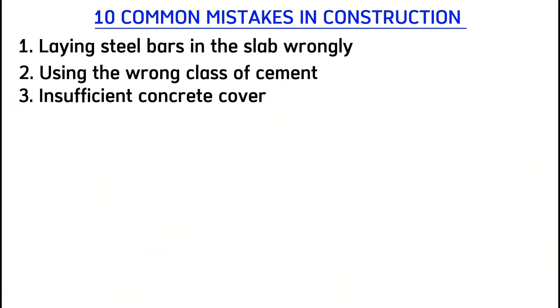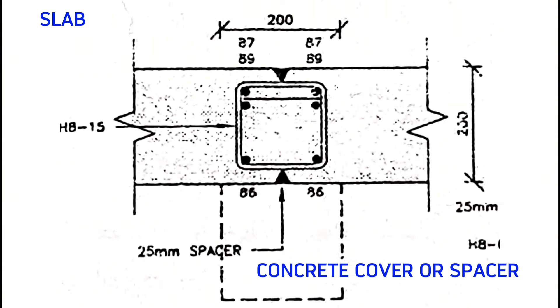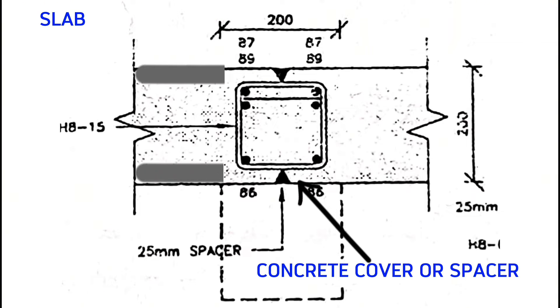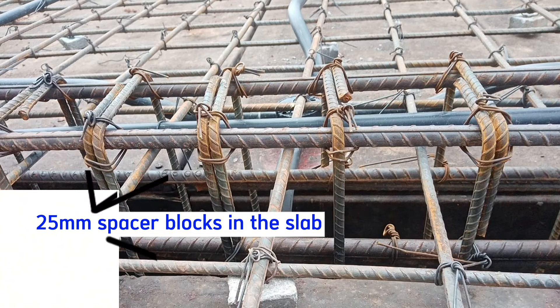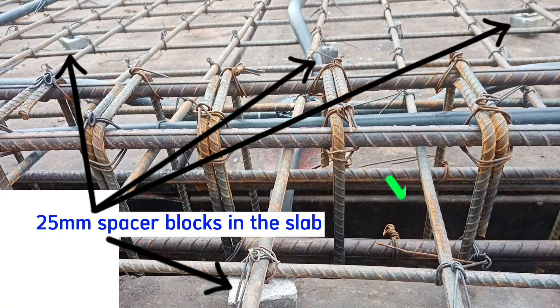Common mistake number three is insufficient concrete cover. If this is a slab, the space at the bottom and the space on top is what we call a concrete cover. This concrete cover protects the steel from corrosion. Therefore, any concrete cover less than 25 millimeters is wrong. The minimum concrete cover in slabs is 25 millimeters.